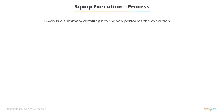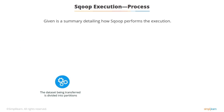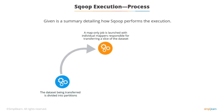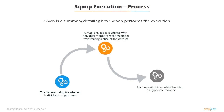Here is an outline of the process. Sqoop performs execution in three steps. First, the dataset being transferred is divided into partitions. Next, a map-only job is launched with individual mappers responsible for transferring a slice of the dataset. Lastly, each record of the data is handled in a type-safe manner as Sqoop uses metadata to infer the data types.